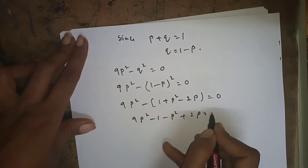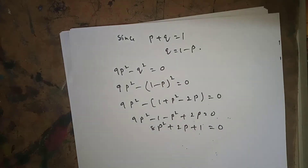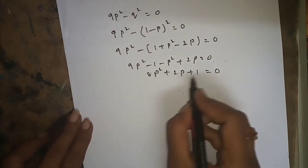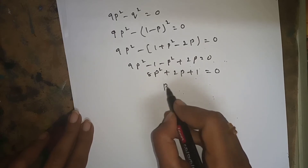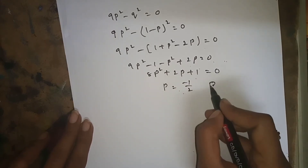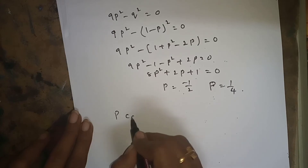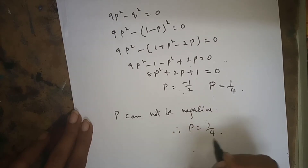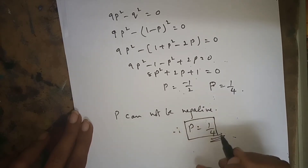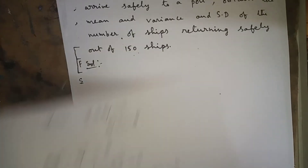Expanding gives 9p^2 - 1 - p^2 + 2p = 0, which simplifies to 8p^2 + 2p - 1 = 0. Factoring this quadratic gives p = -1/2 or p = 1/4. Since p cannot be negative, therefore p = 1/4.